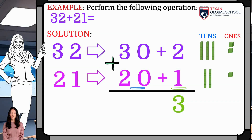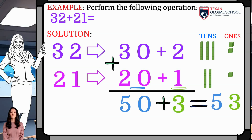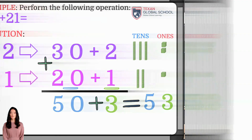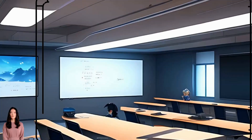Now, add each column. Add 1s and 10s. 2 plus 1 is 3, and 30 plus 20 is 50. Finally, add 50 plus 3, thus getting 53.